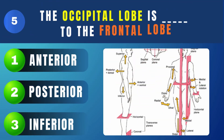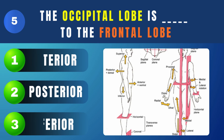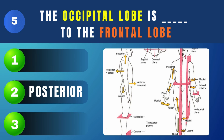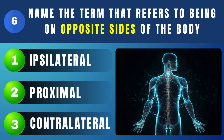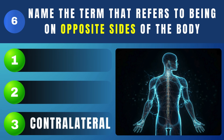The occipital lobe is what to the frontal lobe? Posterior. Name the term that refers to being on opposite sides of the body. Contralateral.